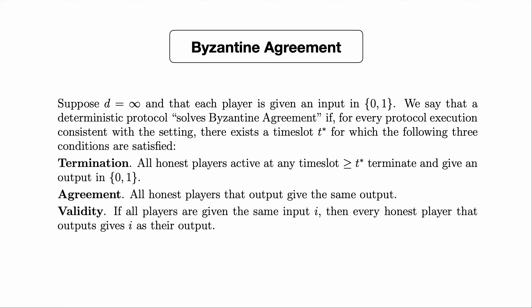Here's what we mean by Byzantine agreement in a context where players may not be active. Suppose we're running an infinite execution and each player is given an input in {0,1}. We say that a deterministic protocol solves Byzantine agreement if for every protocol execution consistent with the setting, there exists a time t* such that the following three conditions are satisfied. Termination: all honest players active at any time slot greater than t* terminate and give an output in {0,1}. Agreement: all honest players give the same output. Validity: if all players are given the same input i, then every honest player gives i as their output.